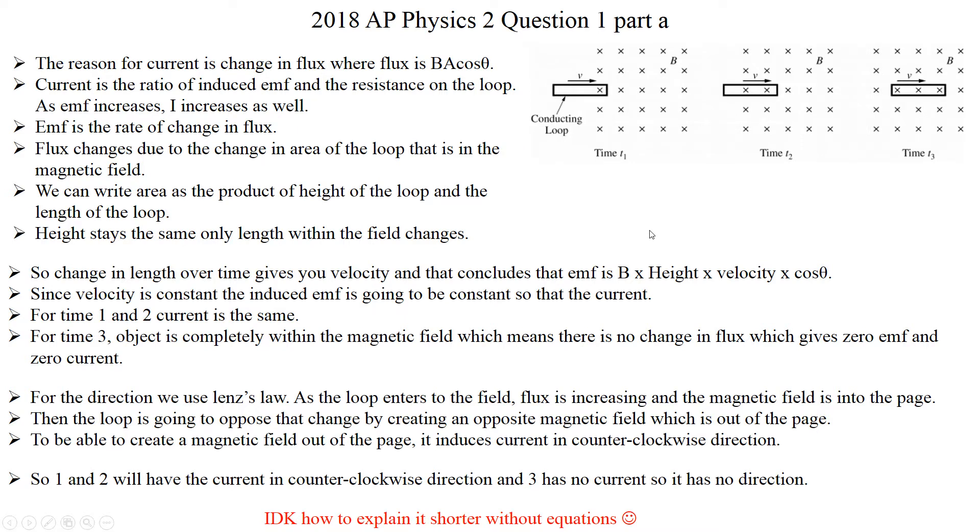In a coherent paragraph length response, compare the magnitude and the direction of the current at times T1, T2 and T3. Include an explanation of why there is or is not a current and direction of the current if one is present. Use fundamental physics concepts and principles in your explanations.